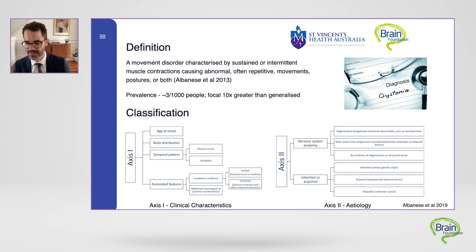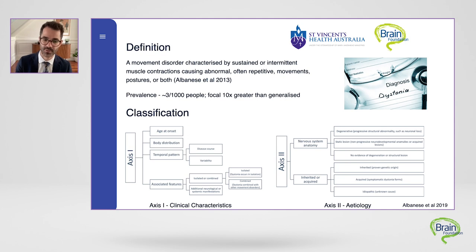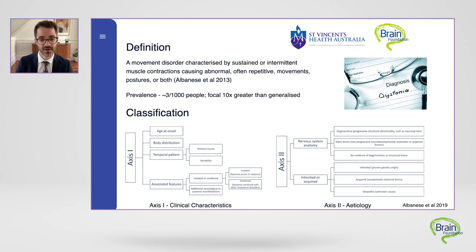Further, we can also classify the cause of dystonia according to whether it is inherited or acquired. This assists us in differentiating forms where there is an identifiable genetic cause — such as in the DYT gene abnormalities — or whether that dystonia has been acquired during the course of life. Whilst it can seem a little nebulous at first, obtaining an accurate diagnosis and classification is really important because it helps target an individual's investigations and guides both the individual and clinician in making decisions regarding their treatment regimen.